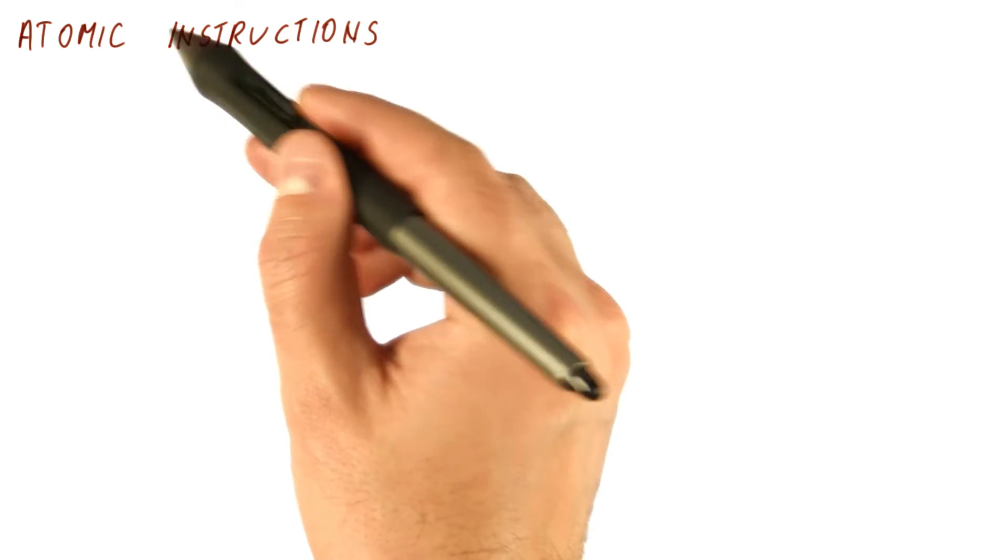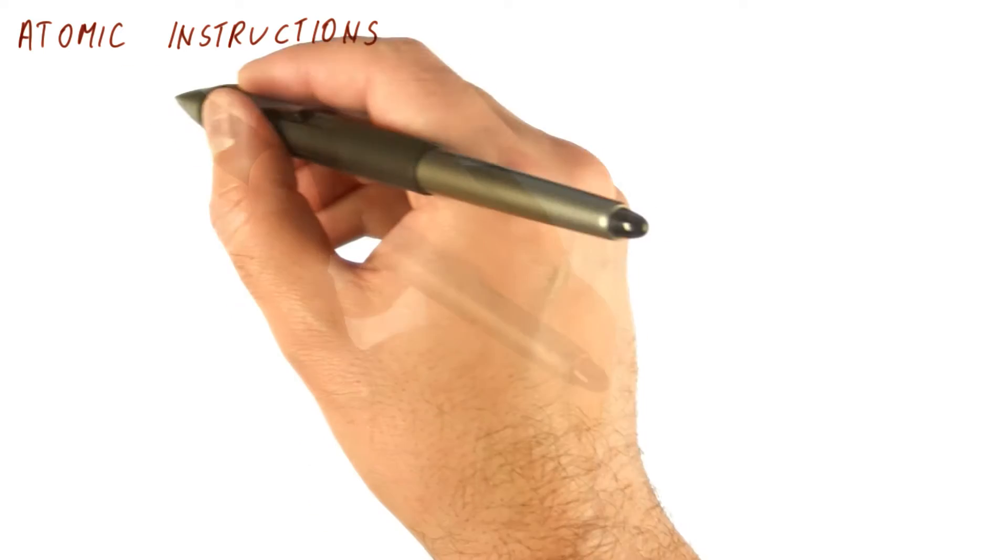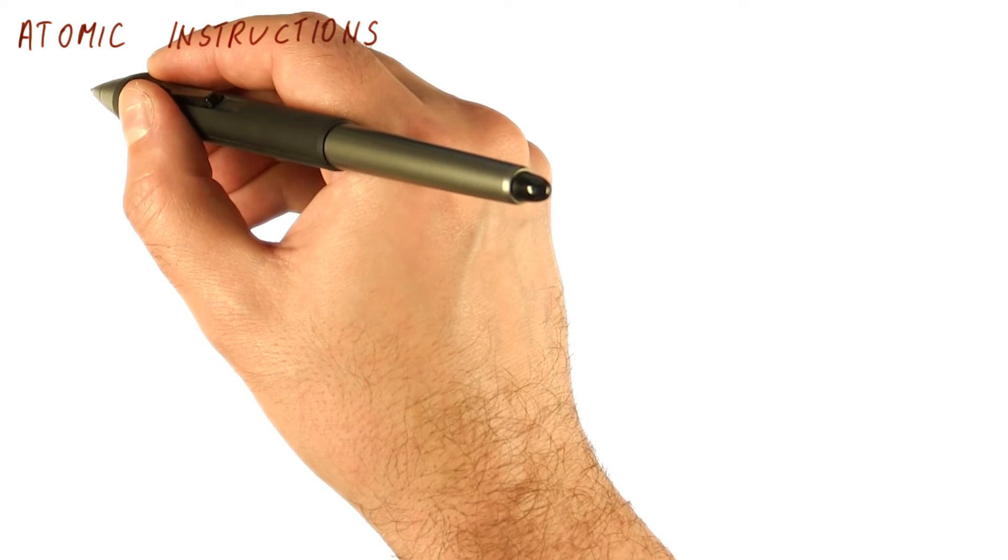We said that to implement locks easily we need atomic instructions that are going to both read and write memory. There are three main types of such instructions.